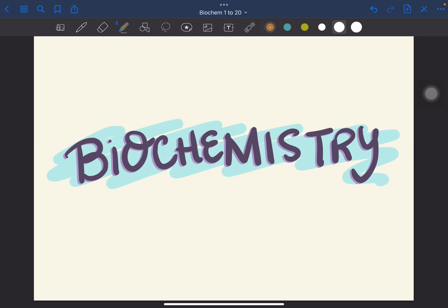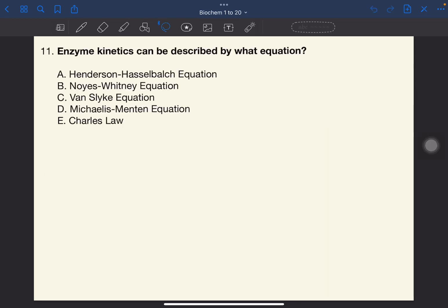This is part 2 of the biochemistry board exam series. The link to part 1 will be in the description below. Number 11. Enzyme kinetics can be described by what equation?